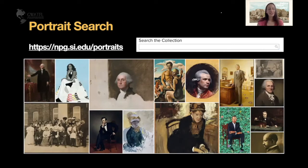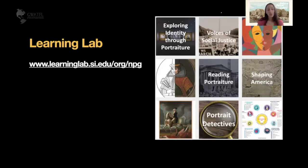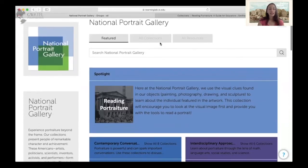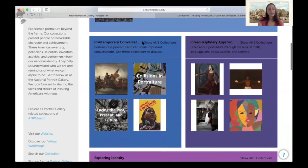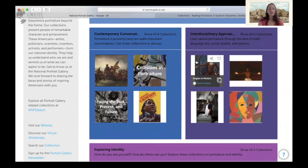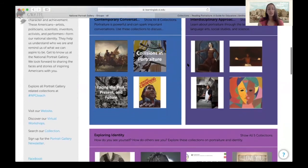Another amazing resource is called the Learning Lab — a Smithsonian-wide tool at learninglab.si.edu where you can either create or use collections that have already been created. You can incorporate material from across the Smithsonian — millions of resources from videos to objects to audio. You can even create quizzes for your students to incorporate when they're learning about portraits. If you go to the Learning Lab organization page for the National Portrait Gallery, you'll see numerous collections, including spotlights on reading portraiture, and collections categorized by contemporary conversations.